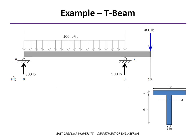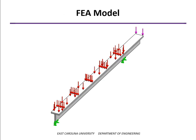The example we're going to look at is the same one from the normal stress examples. We have a distributed load over an 8-foot span, and an overhanging portion with a 400-pound force at the end, using the same T-beam. Before we calculate the stresses, I'm going to show you the results of a finite element analysis model. You can see the supports shown in green, a distributed load shown as a pressure distribution, and the concentrated force on the end.